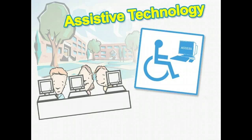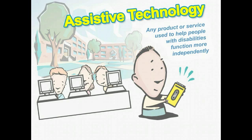All students deserve to be able to express their ideas and otherwise take part in classroom activities regardless of their abilities. Obviously this isn't always the case, as there are a number of disabilities or impairments that may hinder individuals from being able to easily participate in class. This is where assistive technology can help. Assistive technology is any product or service used to help people with disabilities function more independently, such as being able to improve physical or mental functioning, overcome impairments, or improve learning capacity.